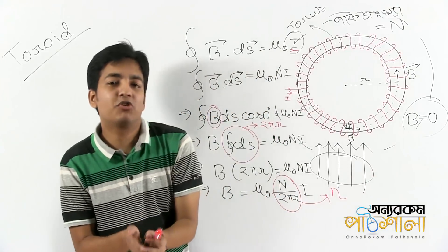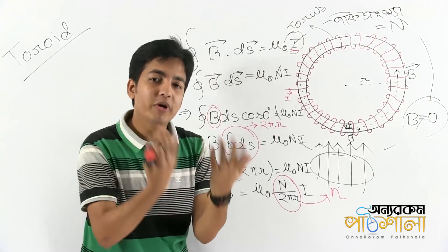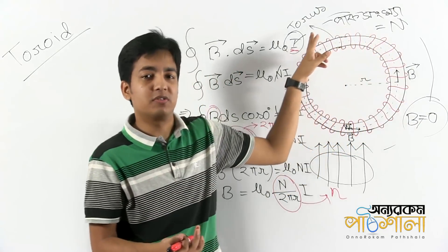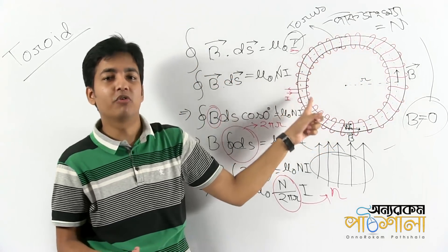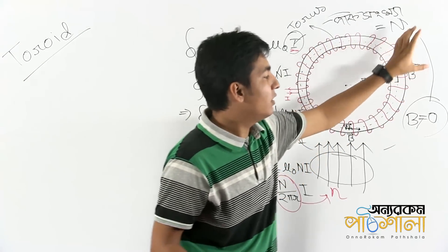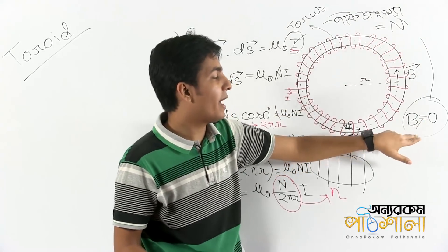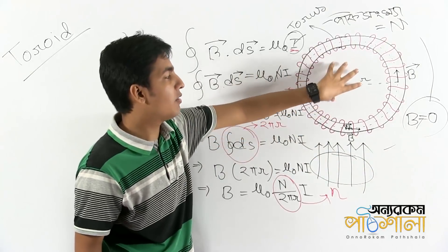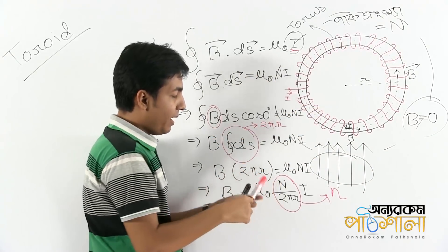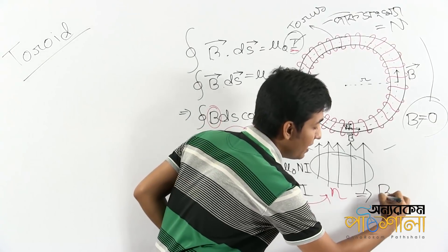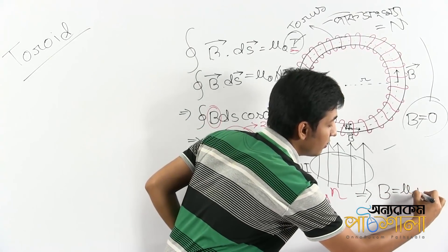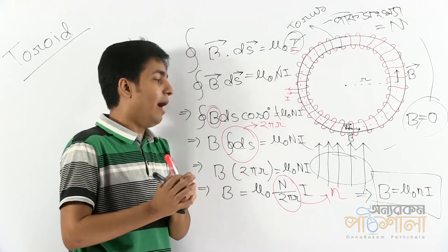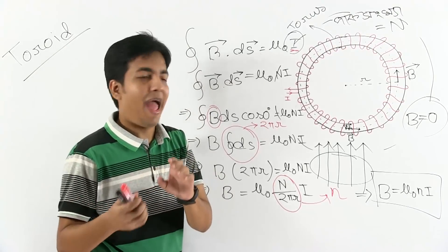So the toroid, as we already talked, has a constant magnetic field inside. It's a constant magnetic field. And while this is an ideal toroid, the magnetic field outside is zero. We have written the whole equation: B equals mu naught n i, where n is the total number of turns per length. I will see you in the next video.